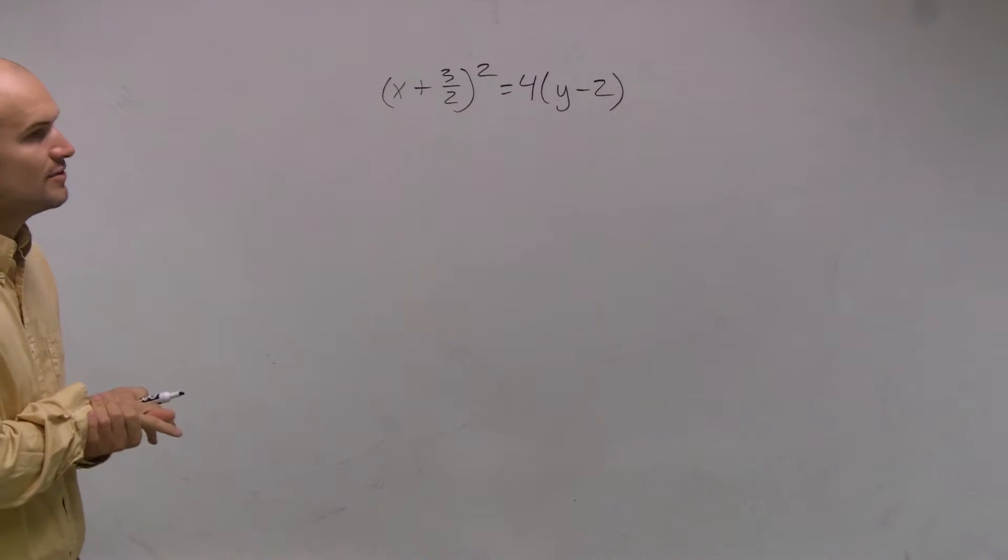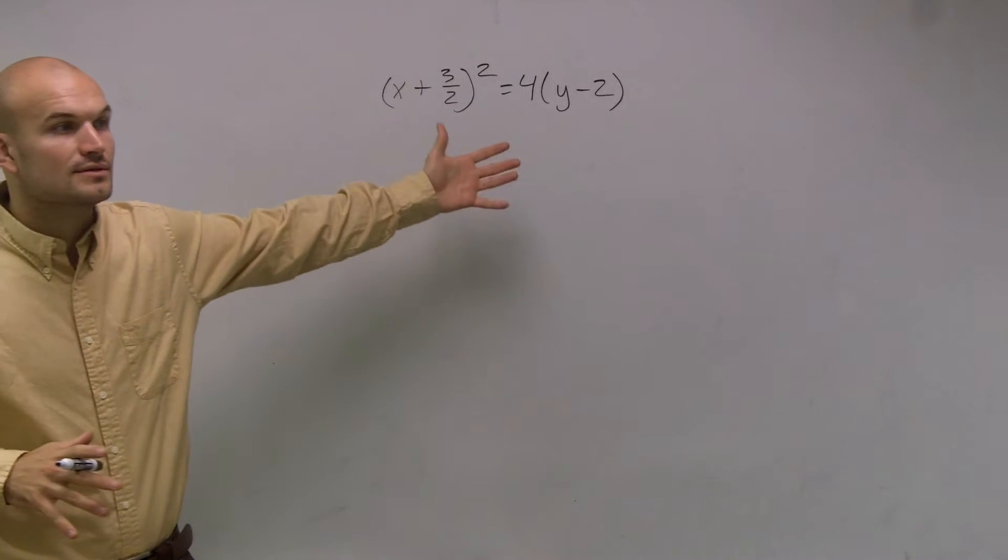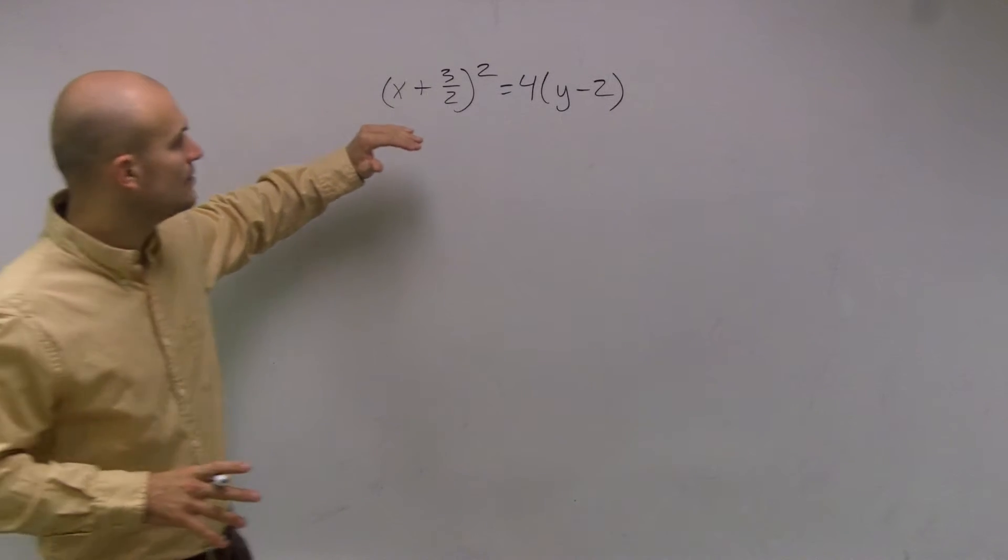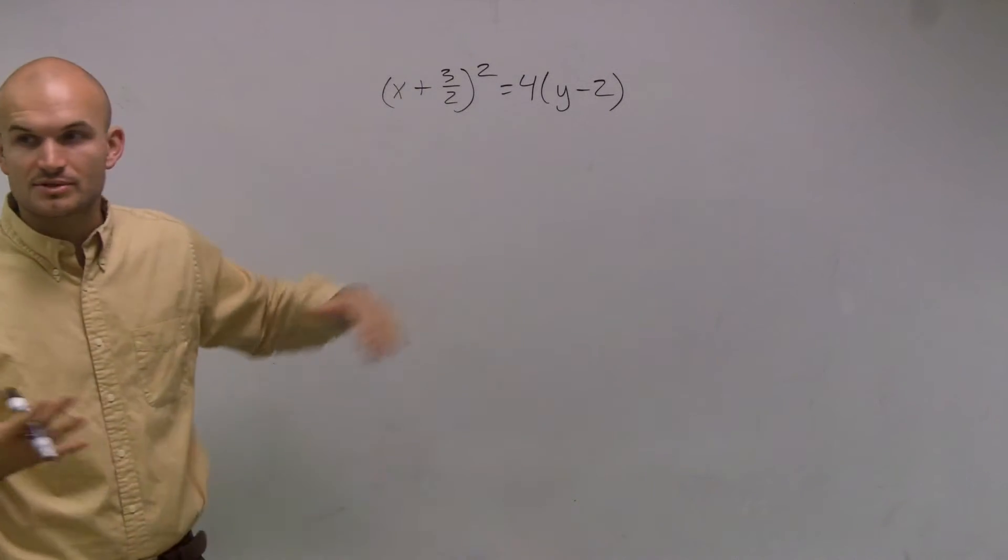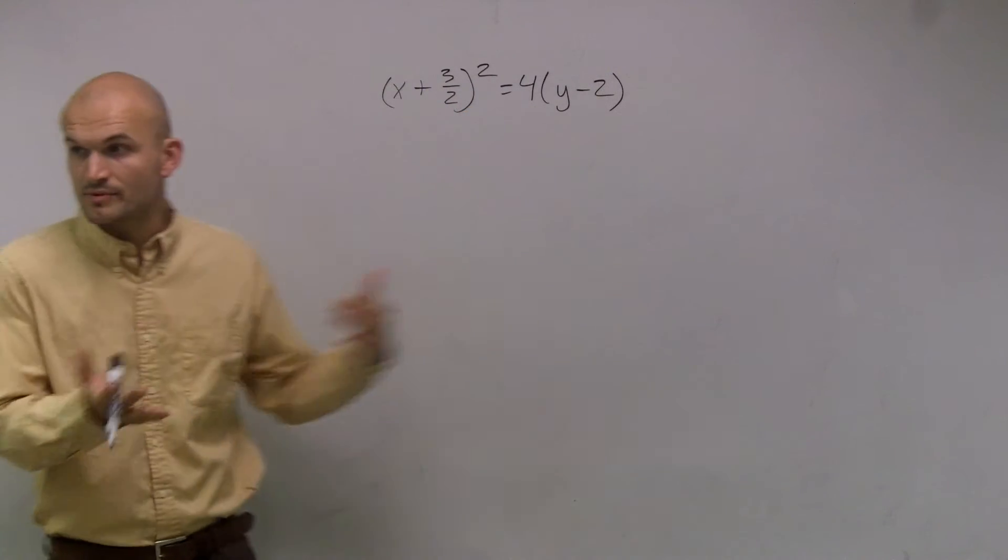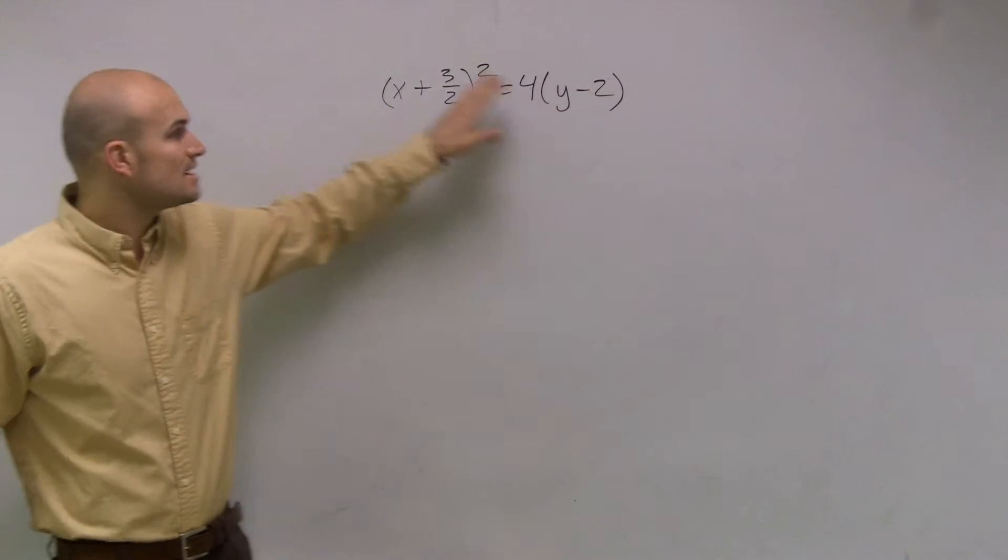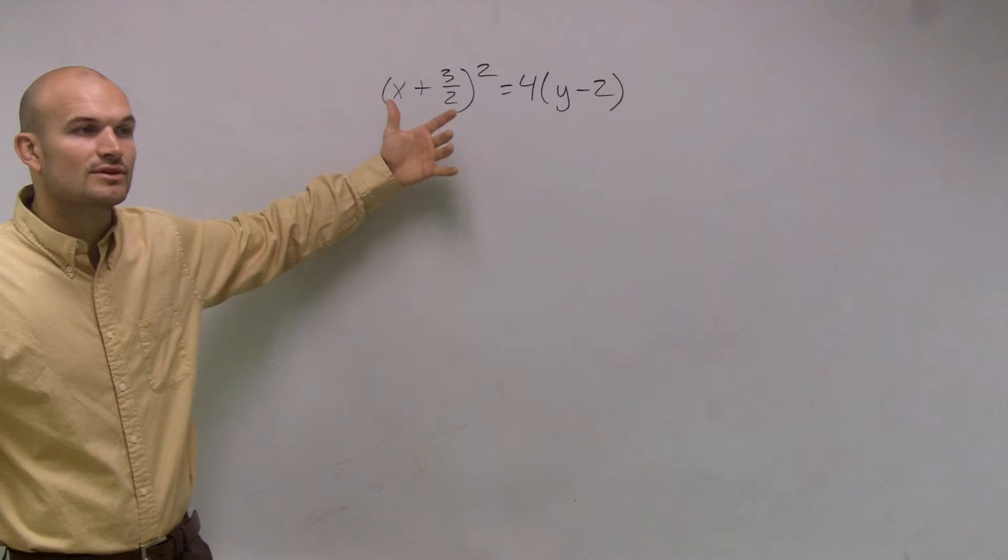The first thing I'm going to do is determine if this is going to be vertical or horizontal. We look at what is going to be our squared term. Since I only have one squared term, I know I'm dealing with a parabola. When we talk about ellipses and hyperbolas, the y and the x were both squared. Since I only have one term squared, I know I'm dealing with a parabola.